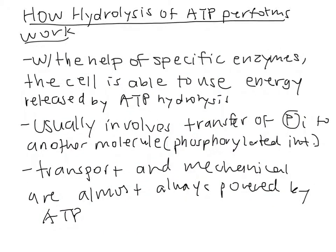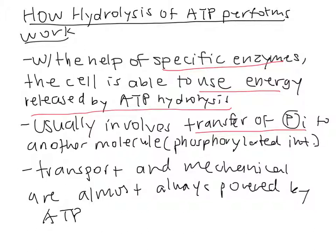On this last slide, we will discuss exactly how the hydrolysis of ATP can perform work. Using the help of specific enzymes, the cell can use energy released by ATP hydrolysis in order to facilitate endergonic reactions. This usually involves the transfer of an inorganic phosphate group from the hydrolysis of ATP to another molecule, and this resulting complex is called a phosphorylated intermediate.